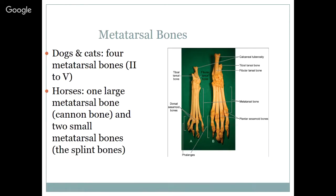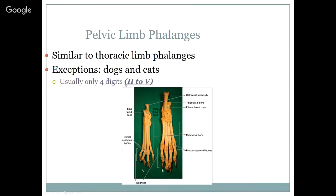Dogs and cats have four metatarsal bones — two through four — and typically don't have the dewclaw on the rear leg; if they do, it's usually removed as it tends to catch on things. Horses have one large metatarsal bone — the third metatarsal, also called the cannon bone — and two small metatarsal bones called splint bones, just like the front foot. The phalanges are similar to the thoracic phalanges. Dogs and cats usually only have four digits in the rear, two through four.